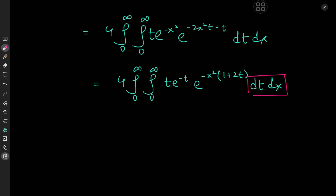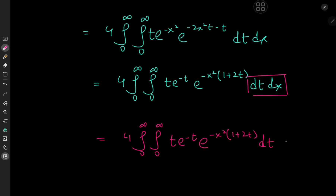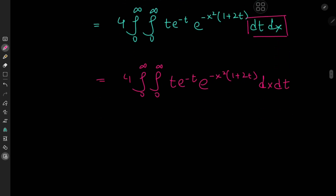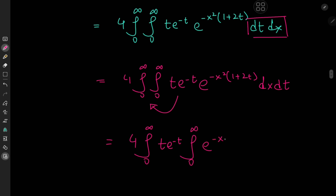So we can switch the order of the integration operators. We have 4 times the double integral from 0 to infinity of t times e to the negative t times e to the negative x squared times (1 plus 2t) dt dx — now first integrating with respect to x, then t. This term, independent of x, can be taken outside the x-integration operator, giving 4 times the integral from 0 to infinity of t times e to the negative t times the integral from 0 to infinity of e to the negative x squared (1 plus 2t) dx, dt.